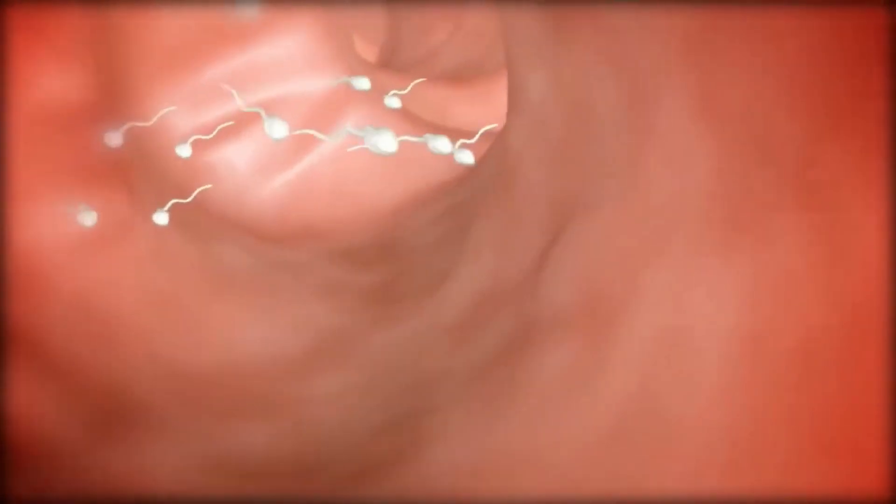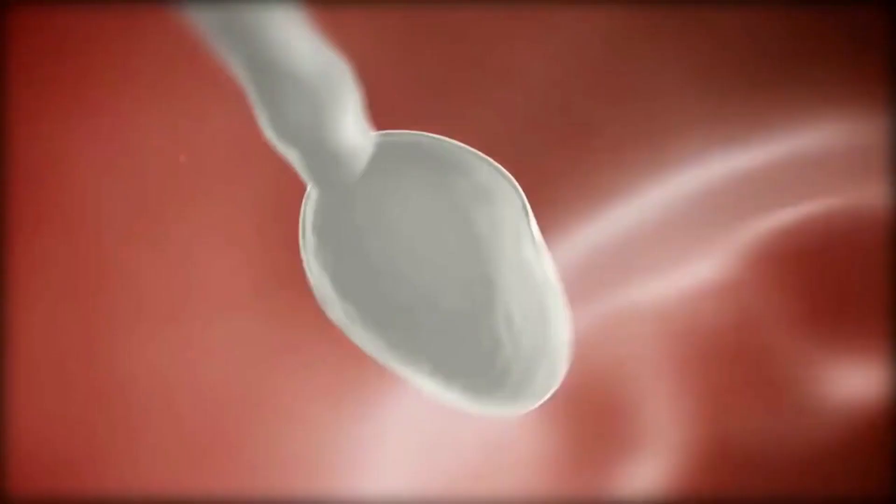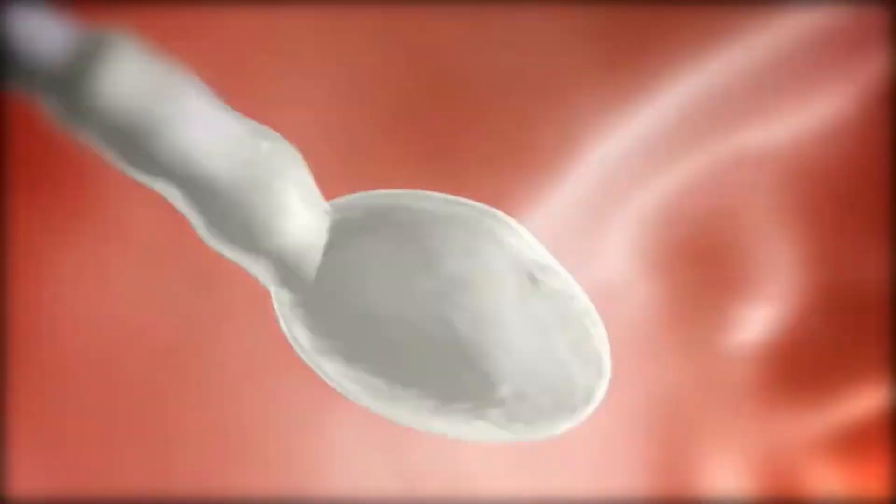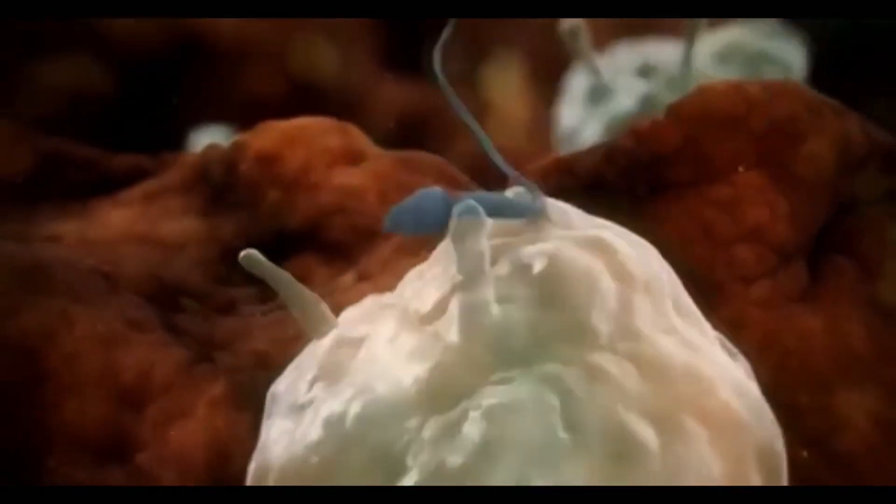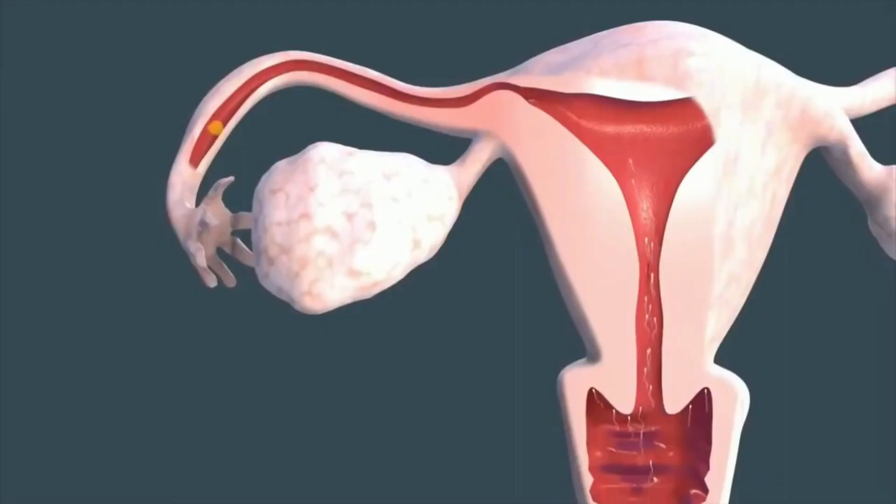Inside the uterus, muscular uterine contractions assist the sperm on their journey toward the egg. However, resident cells from the woman's immune system, mistaking the sperm for foreign invaders, destroy thousands more. Next, half the sperm head for the empty fallopian tube, while the other half swim toward the tube containing the unfertilized egg.